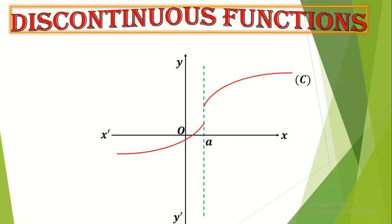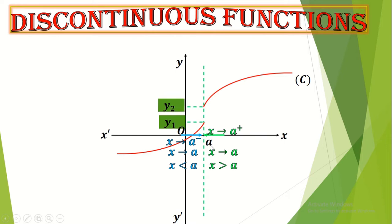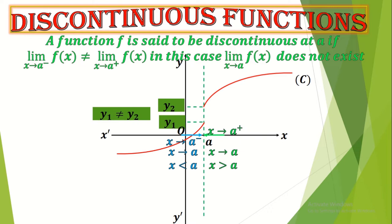What about discontinuous functions? If we look at the curve of a discontinuous function, it is cut into more than one piece. Why is this function discontinuous? If we note that as x tends to A minus, f(x) tends to a limit Y1, while as x tends to A plus, f(x) tends to another image Y2, and Y1 is different from Y2. In this case, we say the function is discontinuous at point A. We can also say that the limit as x→A for f(x) does not exist, since Y1 is different from Y2 — the two limits are completely different.